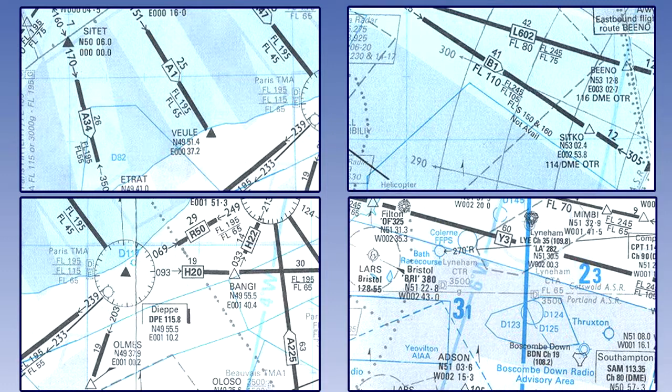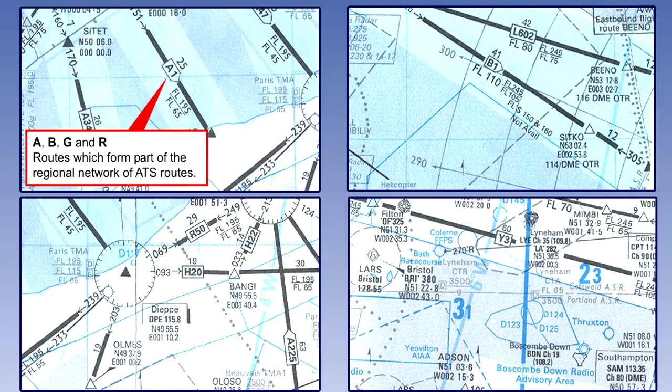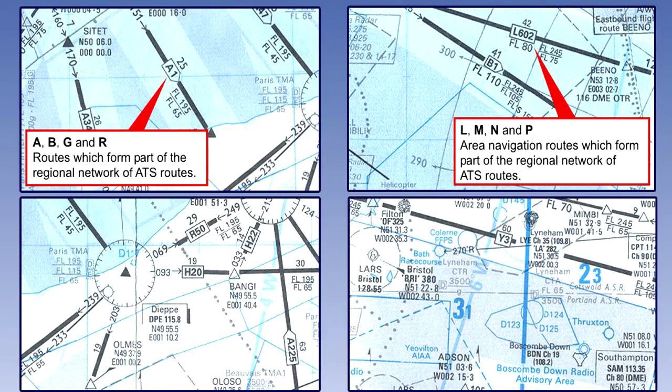Route designator letters are illustrated here. A, B, G and R are for routes which form part of the regional networks of ATS routes. L, M, N and P are for area navigation routes which form part of the regional network of ATS routes.